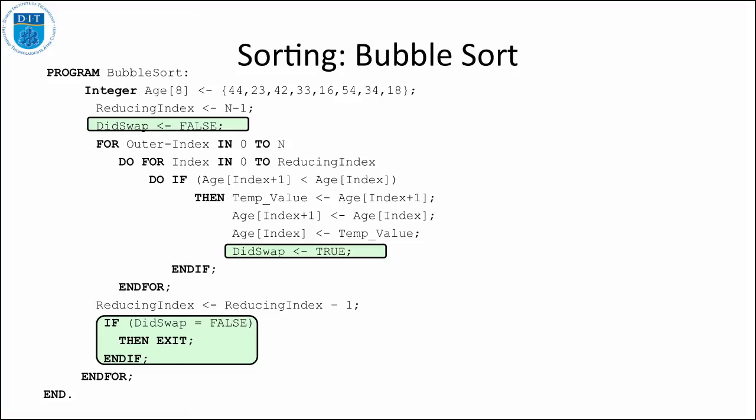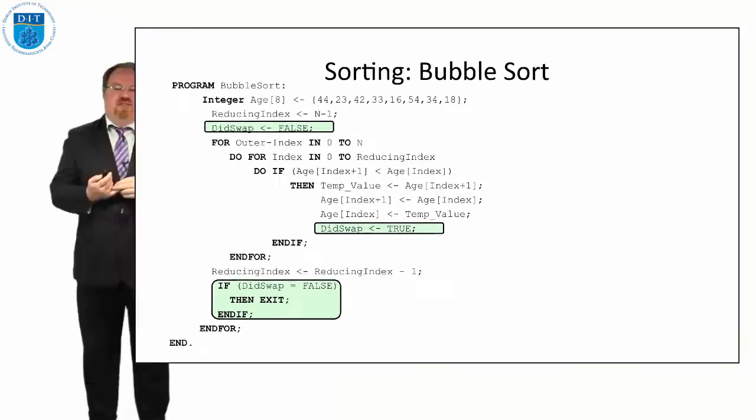If did swap is never set to be true, that means when we go down to the bottom bit and say if did swap equals false, if no swaps occurred, that's what did swap will be. It'll be false because it never went in to set it to be true. Therefore, we just exit the program and we say then exit. So that will optimize our program, particularly if we passed in an array that is already sorted.